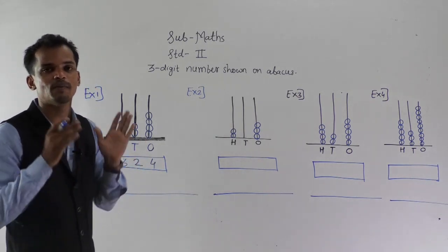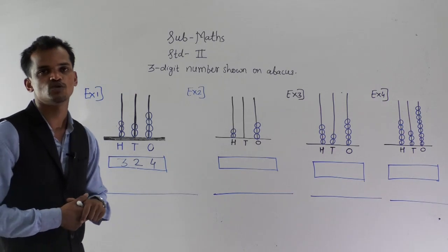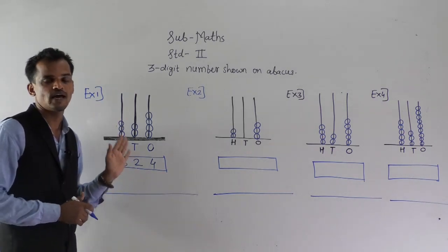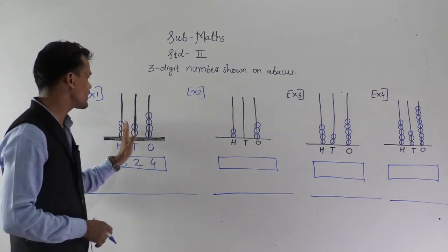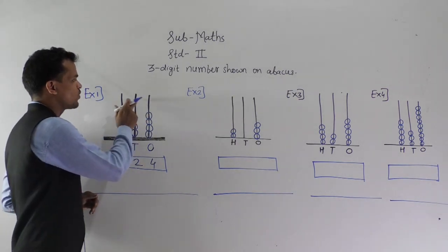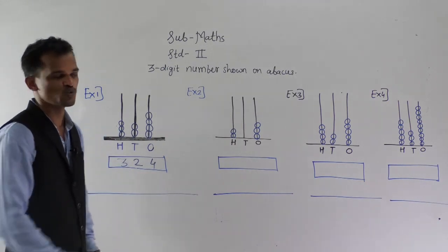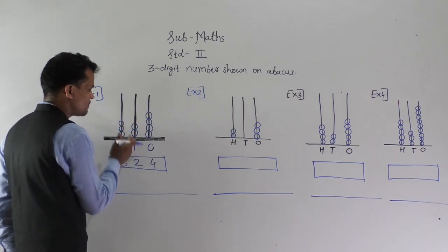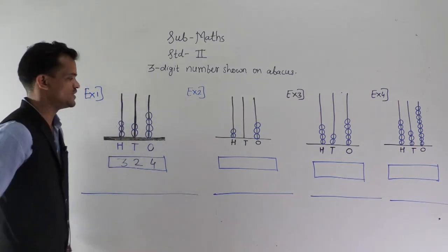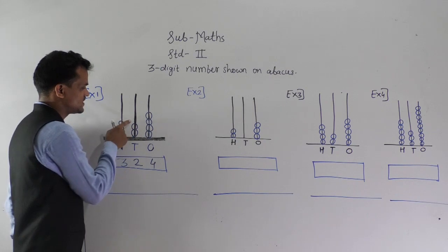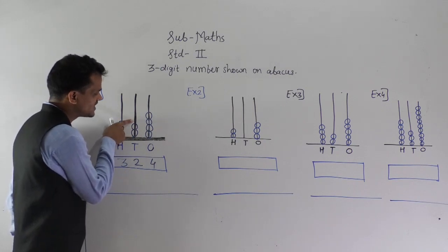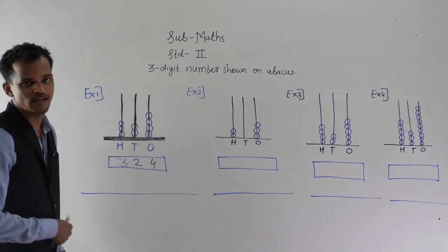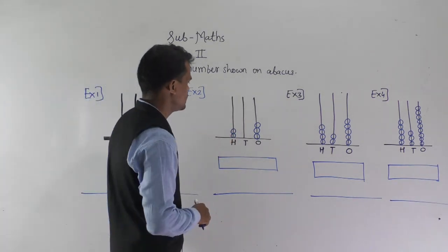The abacus is a mathematical instrument on which we can show any number. To show a three digit number, the abacus should have three spikes, starting from the extreme right: ones place, tens place, and hundreds place. This spike shows the ones place, the middle spike shows the tens place, and the last spike shows the hundreds place.